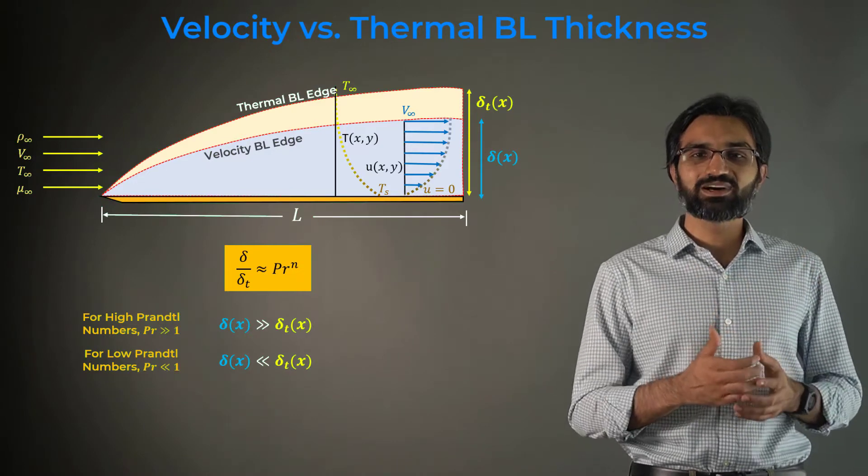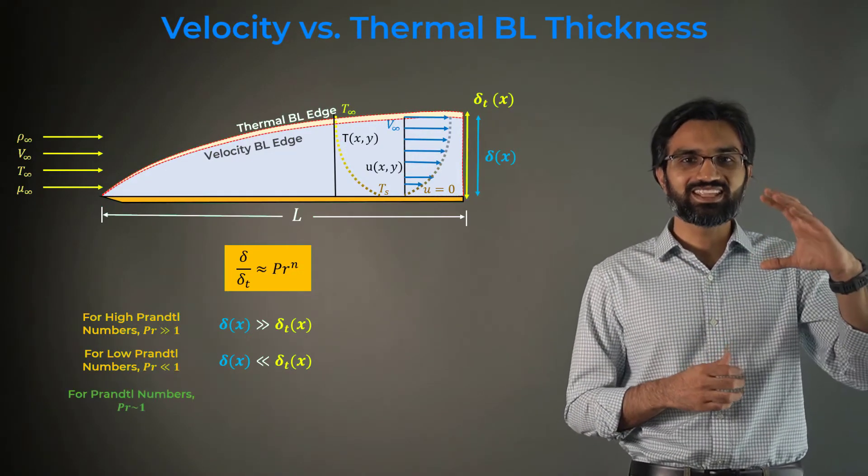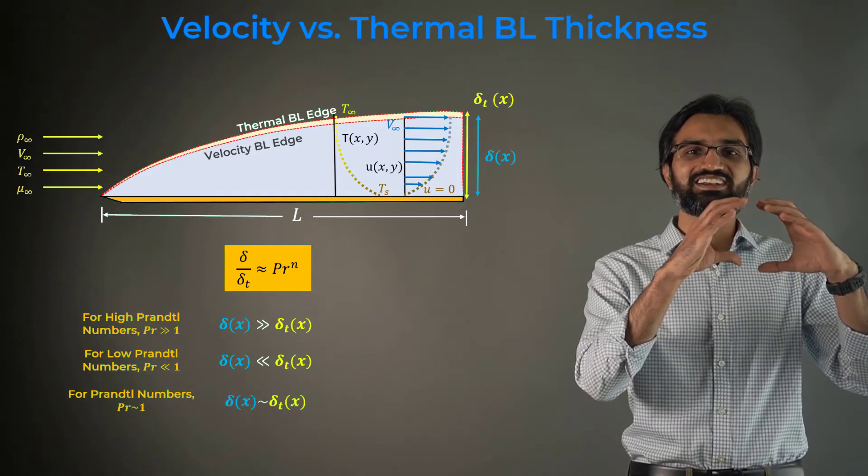For most gases with Prandtl numbers approximately equal to 1, the velocity and thermal boundary layer thicknesses are nearly equal.